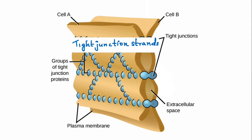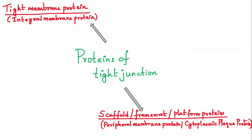This full structure of the tight junction is maintained by its membrane proteins, that is tight junction proteins. There are two types. There is tight membrane protein or integral membrane protein which is occludin, claudin, and junctional adhesion molecules or JAM. Then scaffold, framework, platform or peripheral membrane or cytoplasmic plaque protein. These are cingulin, symplekin and ZO-123.